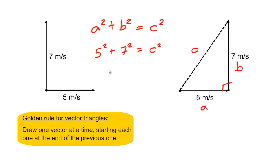Our resultant vector here, c, equals the square root of 5 squared plus 7 squared, which equals 8.60 metres per second. So, that is the magnitude of the resultant velocity.